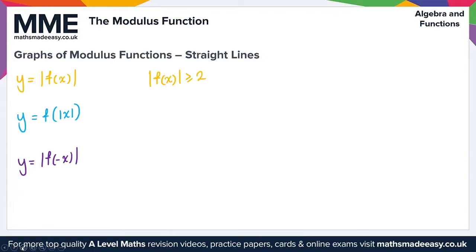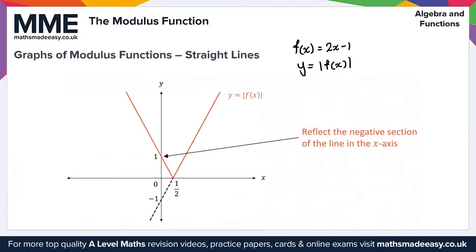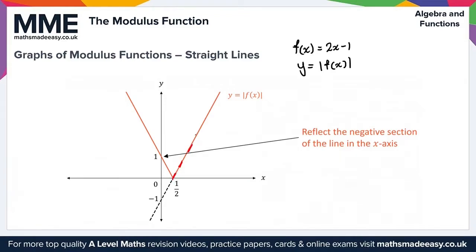For example, with f(x) equal to 2x minus 1, to sketch y equals the modulus of f(x), we first plot y equals f(x). We then reflect the negative section of the line in the x-axis. As we can see, where the line cut through minus 1 on the y-axis, it now cuts through positive 1.